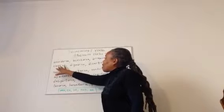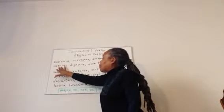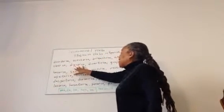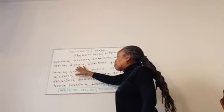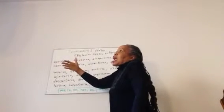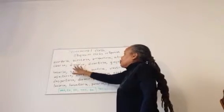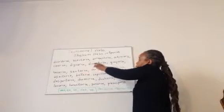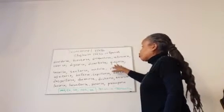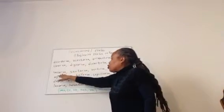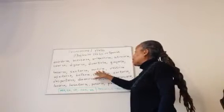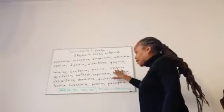Arrepentirse — once again, this is reflexive, but there's an underlying meaning that the fall happened by accident. Dignarse is a cognate, similar to the English idea of not dignifying a question with an answer — to dignify oneself. Divertirse means to enjoy. Quejarse means to complain. Secarse means to dry. Sentarse means to sit. Sentirse means to feel. Vestirse means to dress.